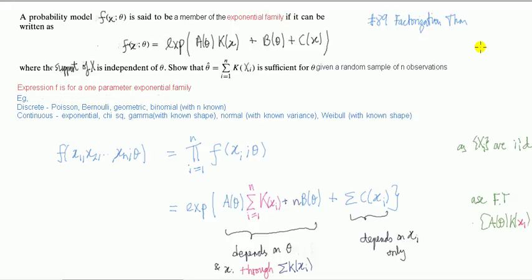In problem 89, we used the factorization theorem to find a sufficient statistic for the parameter of a geometric distribution. In this one, we're going to generalize that because the geometric distribution belongs to something called the exponential family, and we're going to get a general expression for a sufficient statistic for a parameter in the exponential family of distributions.